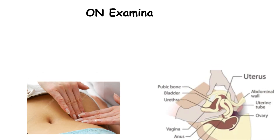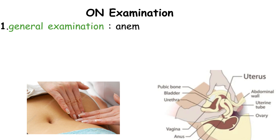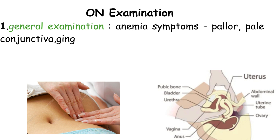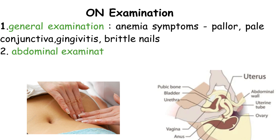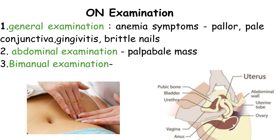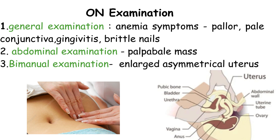On general examination, anemia symptoms are usually assessed, such as pallor, pale conjunctiva, gingivitis, and brittle nails. On abdominal examination, a palpable mass is detected. On bimanual examination, an enlarged asymmetrical uterus can be palpated.